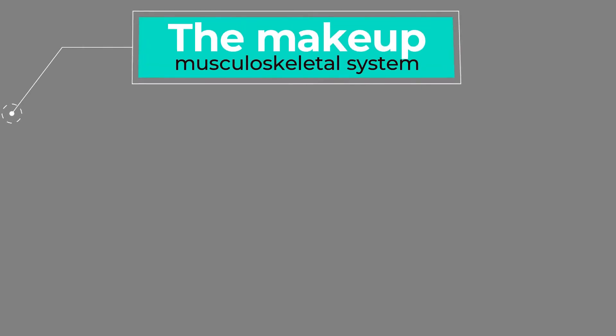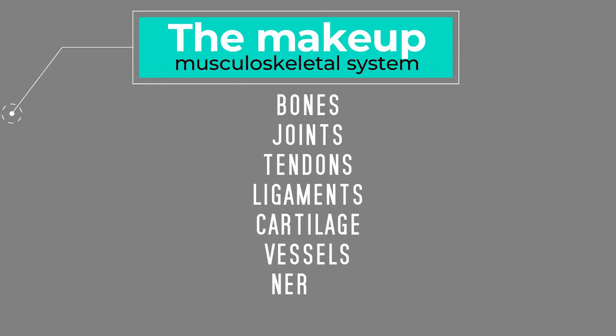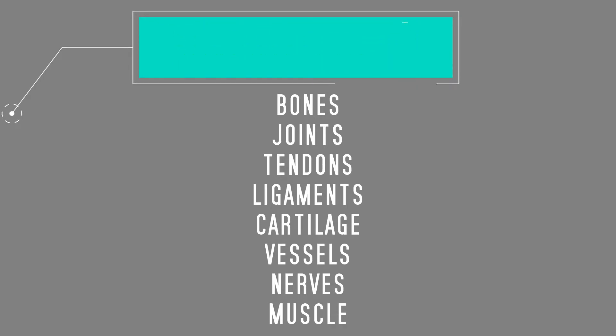Let's get this video started. For the first week of this series, I will be teaching you the foundations of the musculoskeletal system. The musculoskeletal system is made up of joints, ligaments, tendons, bones, cartilage, vessels, nerves, and muscle. First, let's talk about bones and their supporting structures.